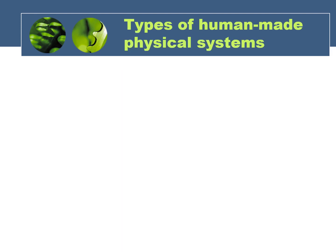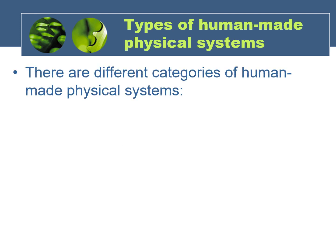Just to keep your life interesting, it turns out that human-made physical systems can be further broken down into even smaller categories based on the type of energy needed for them to operate. This isn't a complete list, but just to give you an idea, here are a few examples.